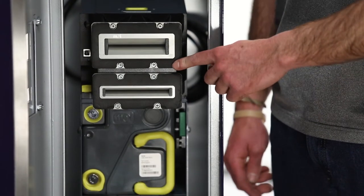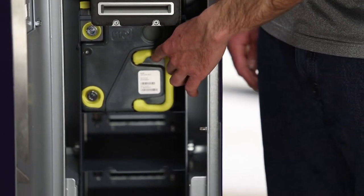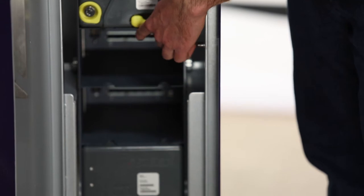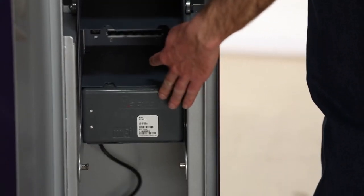This is the main module. This is the cash box. This is our floater cassette. Here are our recyclers.